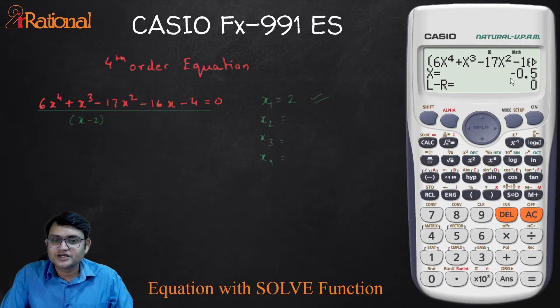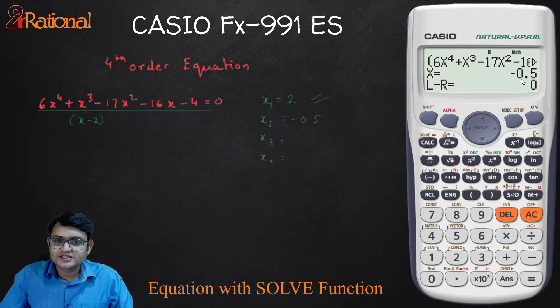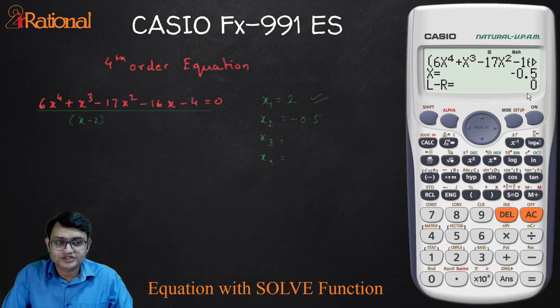And the next answer here is minus 0.5. So my next root is minus 0.5. And you can see L minus R is still 0. So this is an exact answer, not an approximate answer.